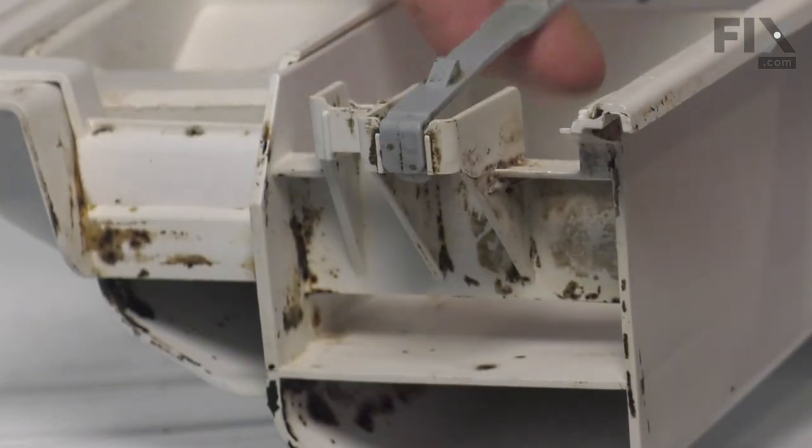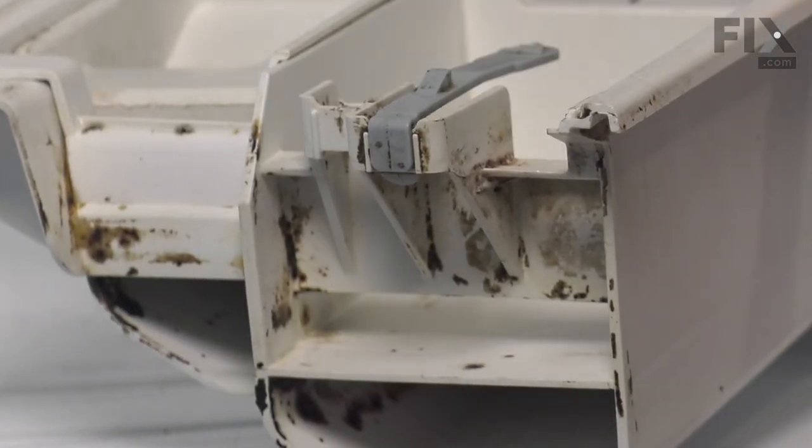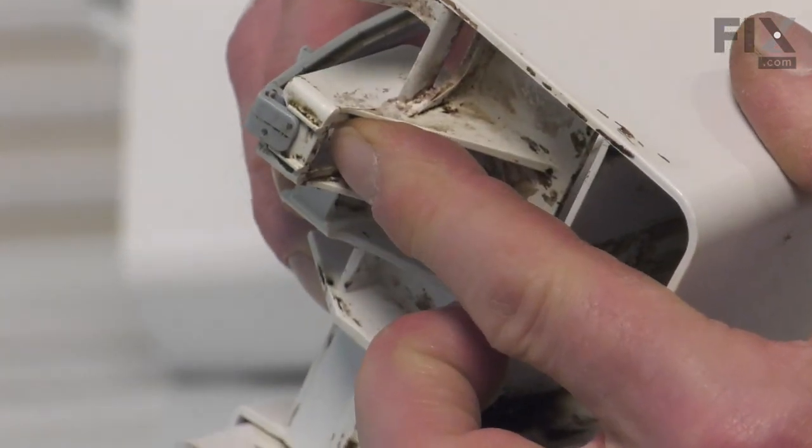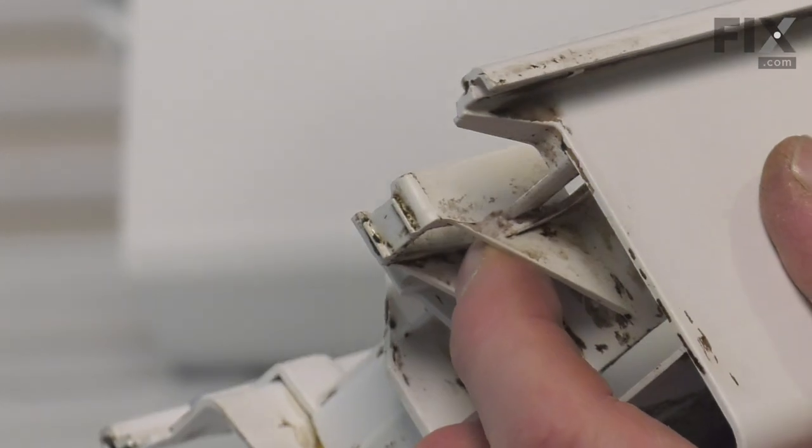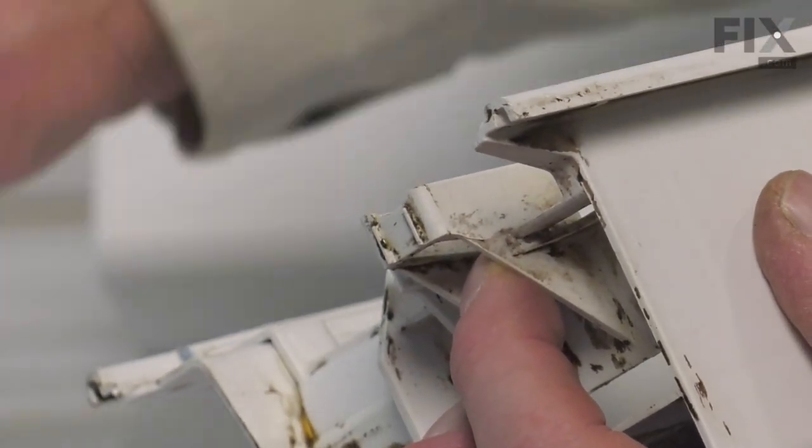Our next step will be to remove that release tab to transfer it to the new drawer. From the bottom of it, you'll notice there is a plastic hook. Simply push that forward and lift that off and just set that aside for now.